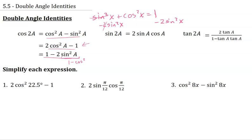If you did not follow that, no big deal. You do not need to be able to obtain the different forms, but I just want to point out that they come from sine squared plus cosine squared equals 1 and different rearrangements of those. So cosine of 2a is either equal to cosine squared a minus sine squared a, 2 cosine squared a minus 1, or 1 minus 2 sine squared a. If you are given this and writing one of the three forms, it really does not matter which one you choose.